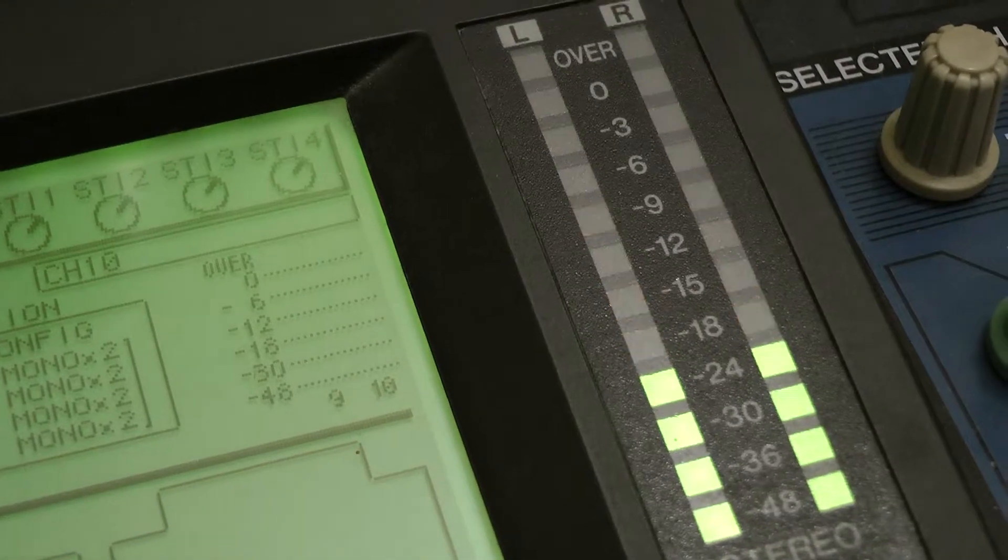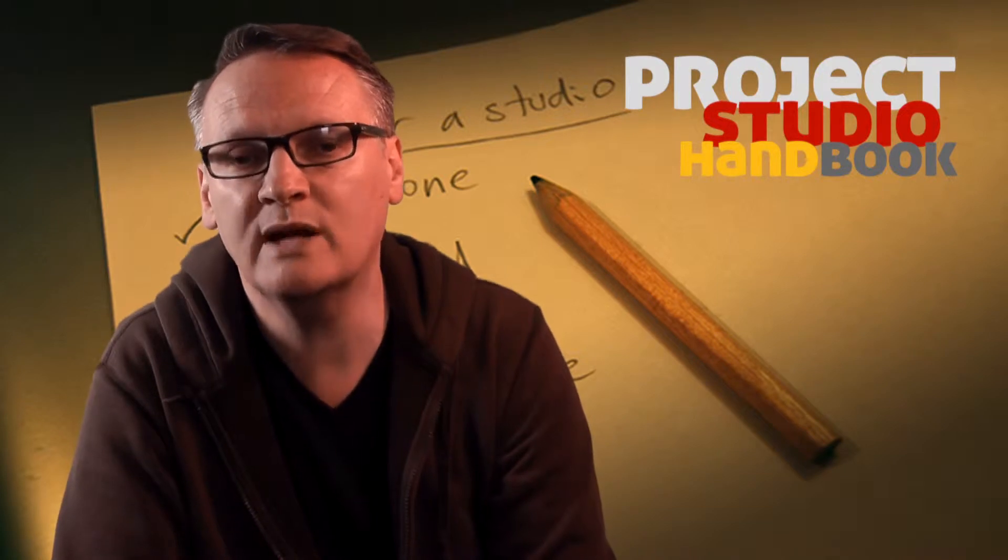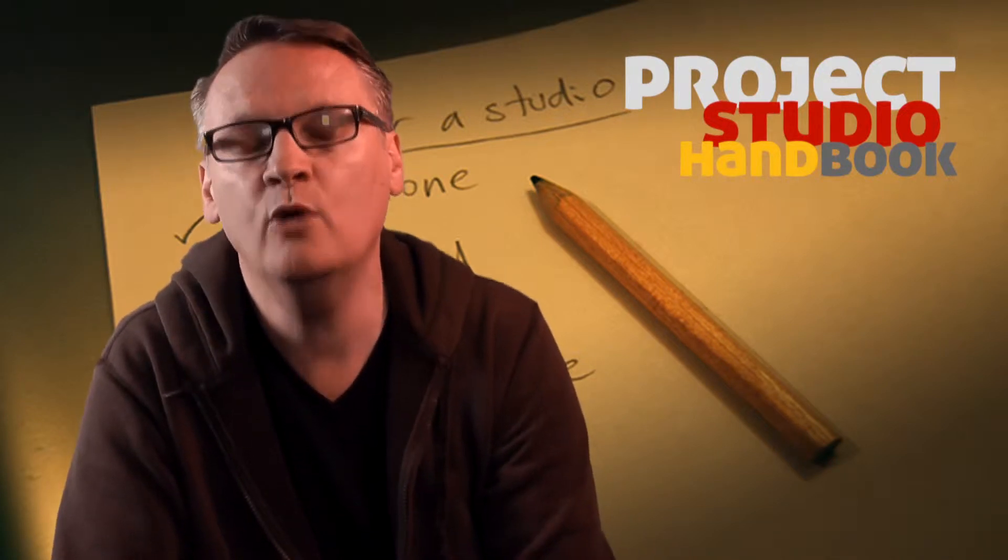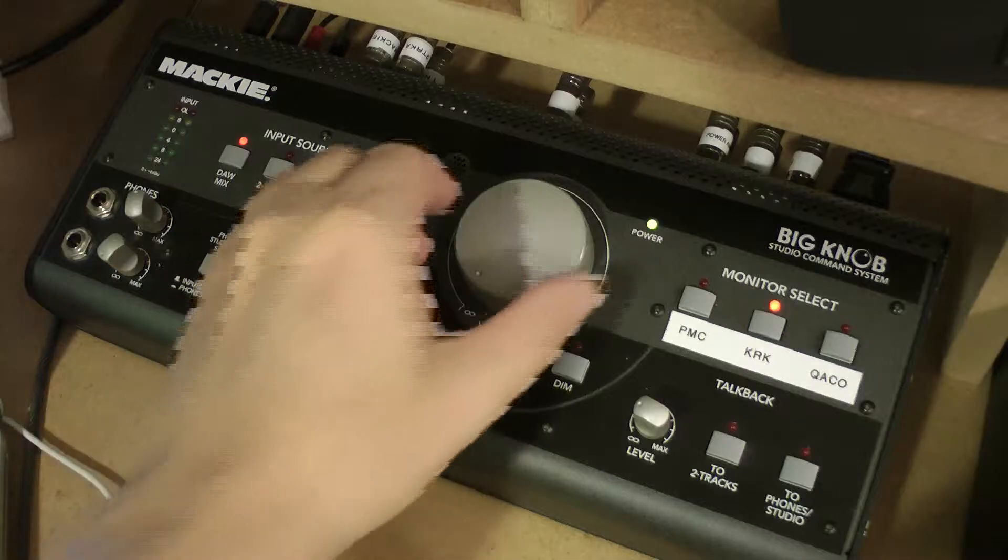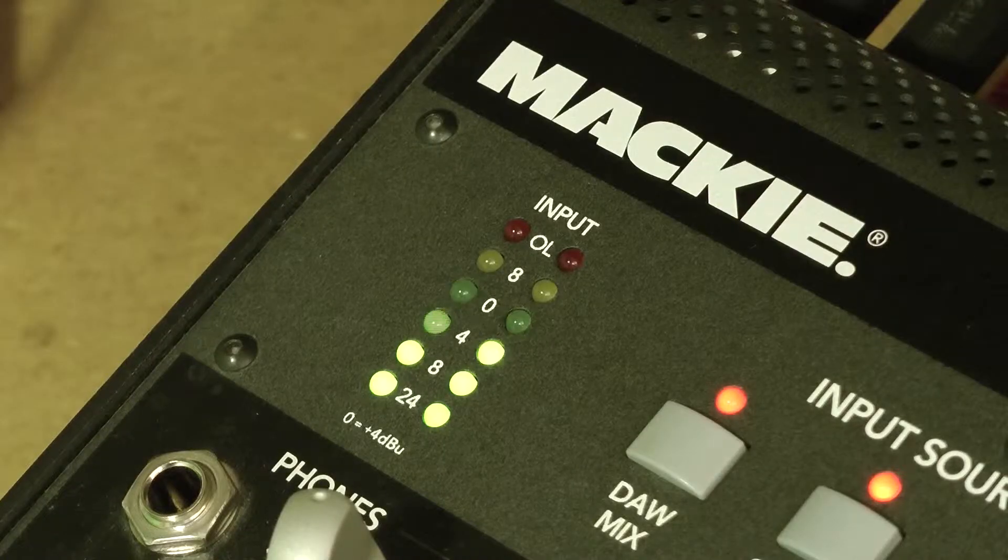Once a signal is at line level it will normally stay there throughout the mixing process and only be amplified up to headphone or loudspeaker level when it is sent for monitoring.